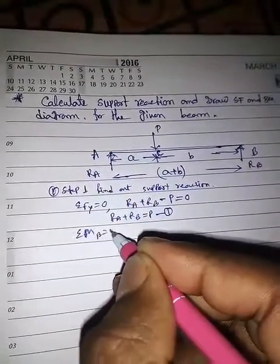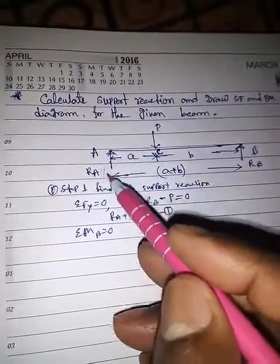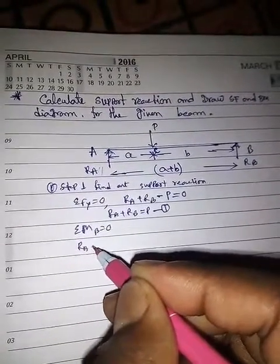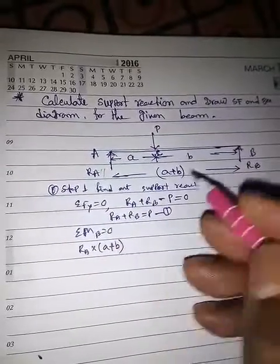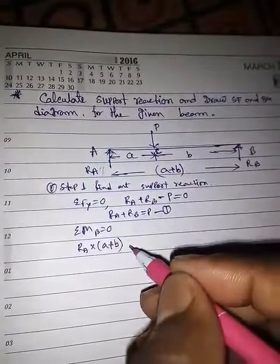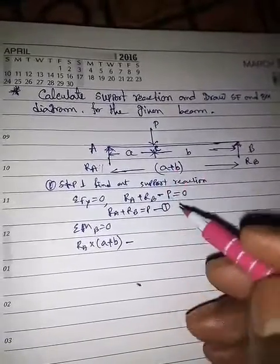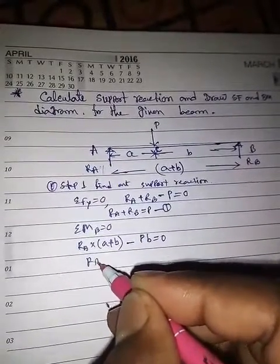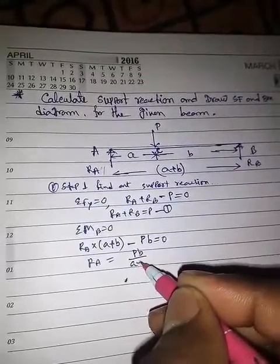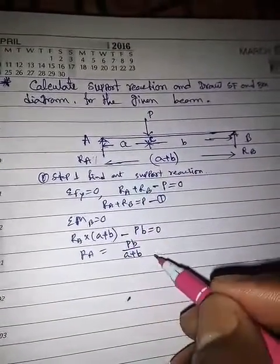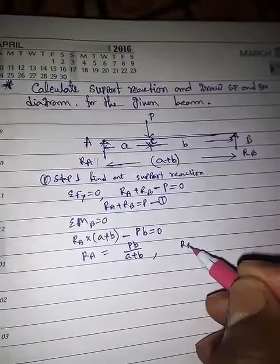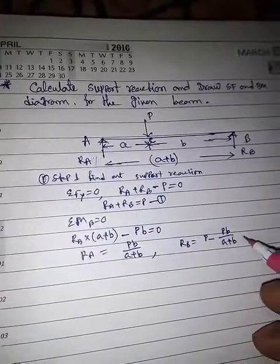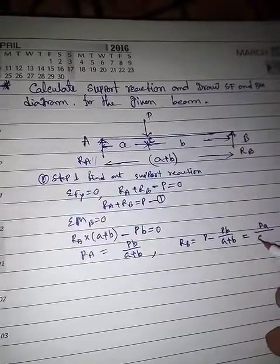Taking moment at point B, MB equals zero. RA will produce a clockwise moment so it is positive: RA into (a + b). P produces an anticlockwise moment so it is negative: minus P into b equals zero. Solving, RA equals Pb/(a+b). Substituting into equation one, RB equals Pa/(a+b).